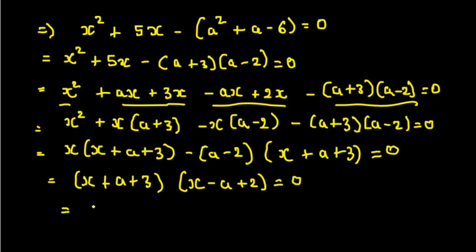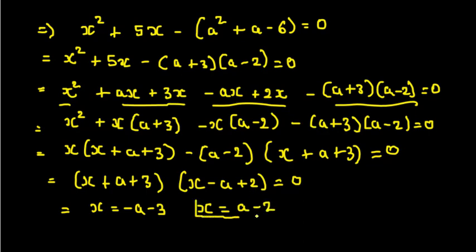So the factors are (x + a + 3) and (x minus a minus 2) equals zero. Setting each factor to zero: from the first, x = minus a minus 3. From the second, x = a minus 2. So these are the two values of x by factorization.